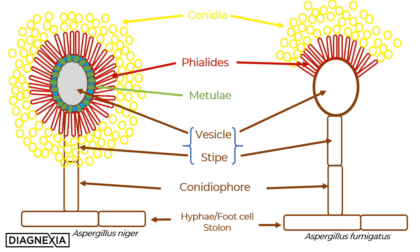Aspergillus niger is called a biseriate fungus because it has two layers, as opposed to Aspergillus fumigatus, which is a uniseriate fungus with one layer. The additional layer seen in Aspergillus niger is a metulae layer. Taking it in order: the most peripheral forms are the conidia, produced at the ends of finger-like projections called phylides, which arise from the metulae. Within the center is a vesicle, born by a hyphal form called a stipe. Collectively, the vesicle bearing the metulae, phylides, and conidia, together with the stipe, form the conidiophore.